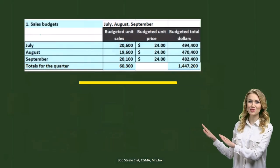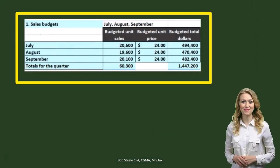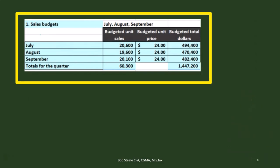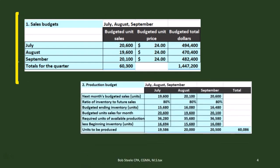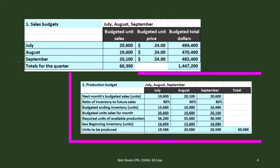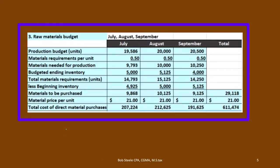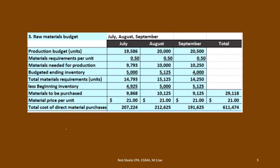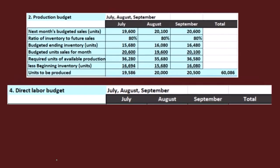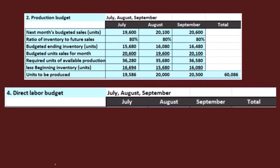Now remember that last time we already did the sales budget — here's just a recap of what it looked like. We used that sales budget to create the production budget, determining how many units we needed to produce. Then we used that for step three, the raw materials budget. That's where we left off last time. Now we're moving forward to the direct labor budget.